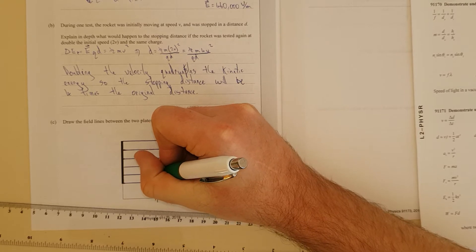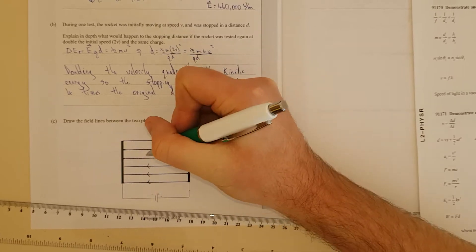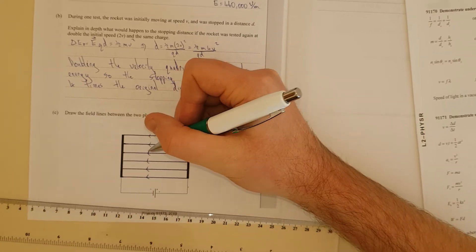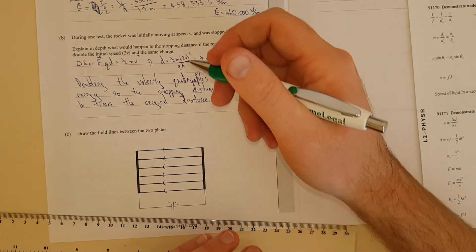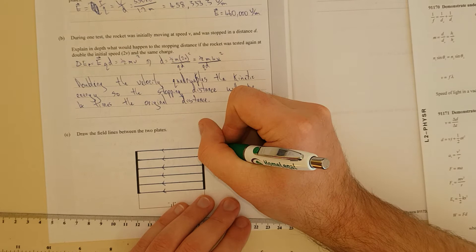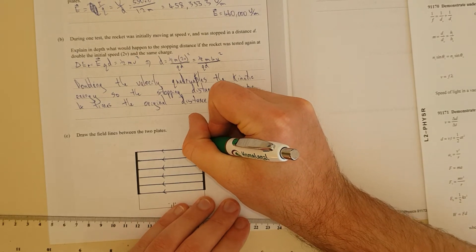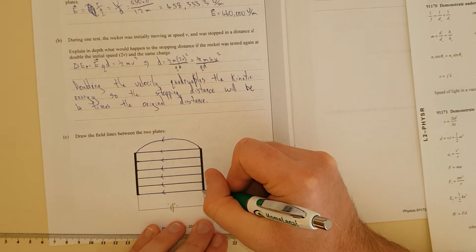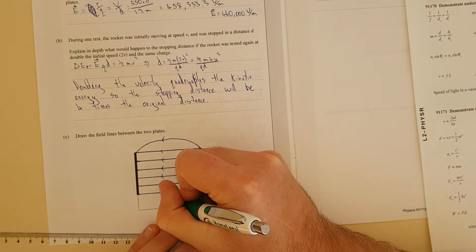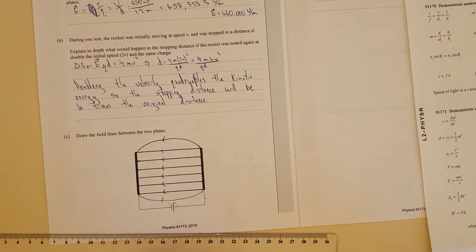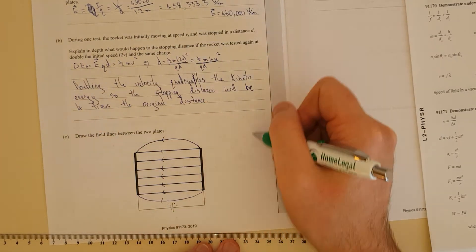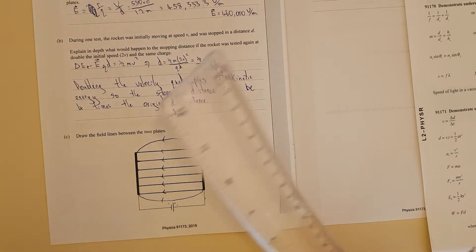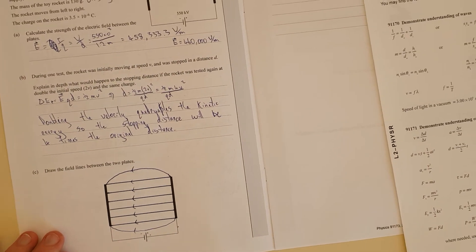So field lines run from positive to negative. So we're just going to chuck arrows neatly, as neat as we can. And now this would probably get us the achieved. This here would get us the merit. When we chuck in our loopy ones to here and our loopy ones here. There we go. And you can probably overdo it and have massive ones going all around, but you don't need to worry about that.